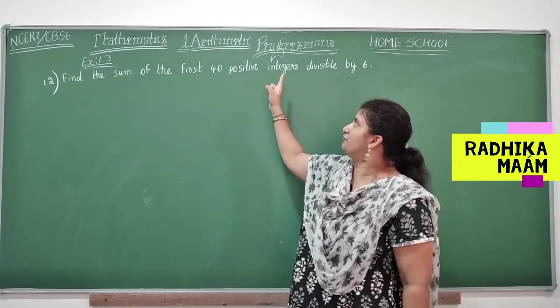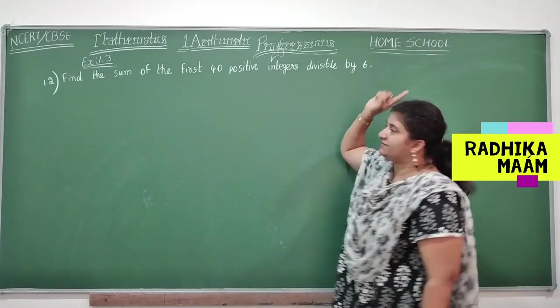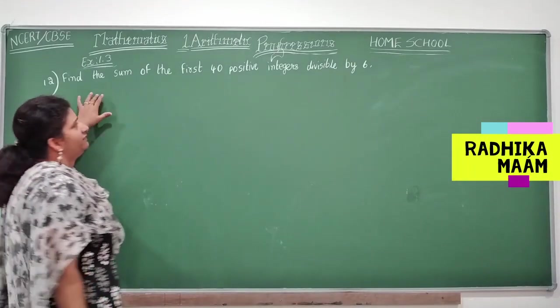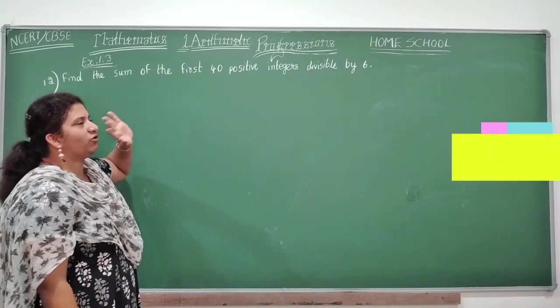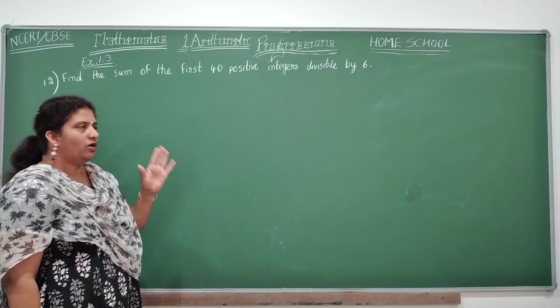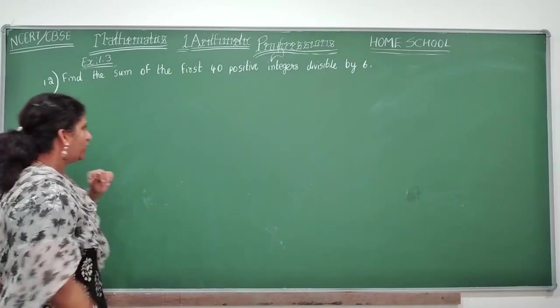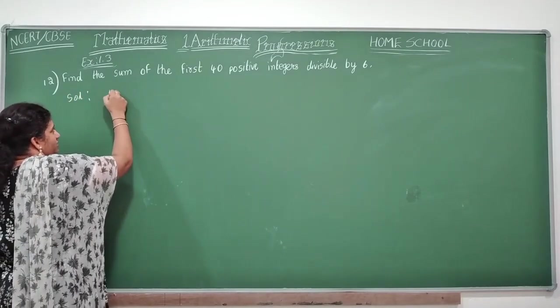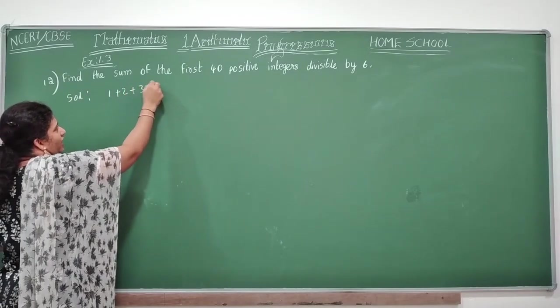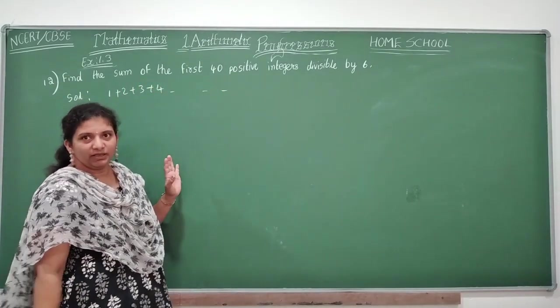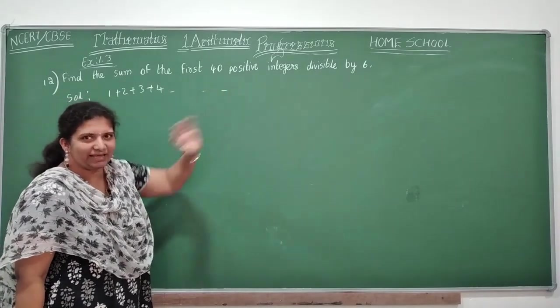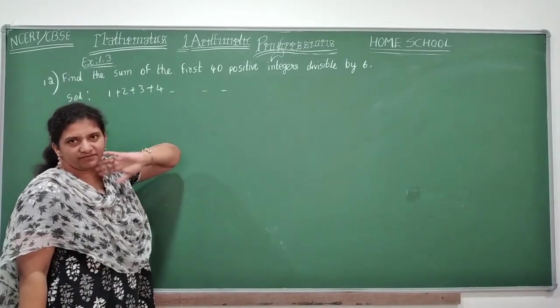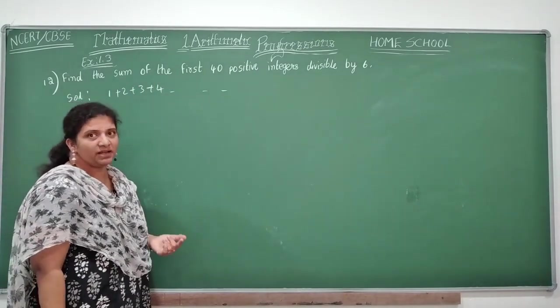Now we are going to continue our 12th problem. Look here children, what is your 12th problem? Find the sum of the first 40 positive integers divisible by 6. So what do we feel? First 40 positive integers - immediately you go on writing all the positive integers, right?